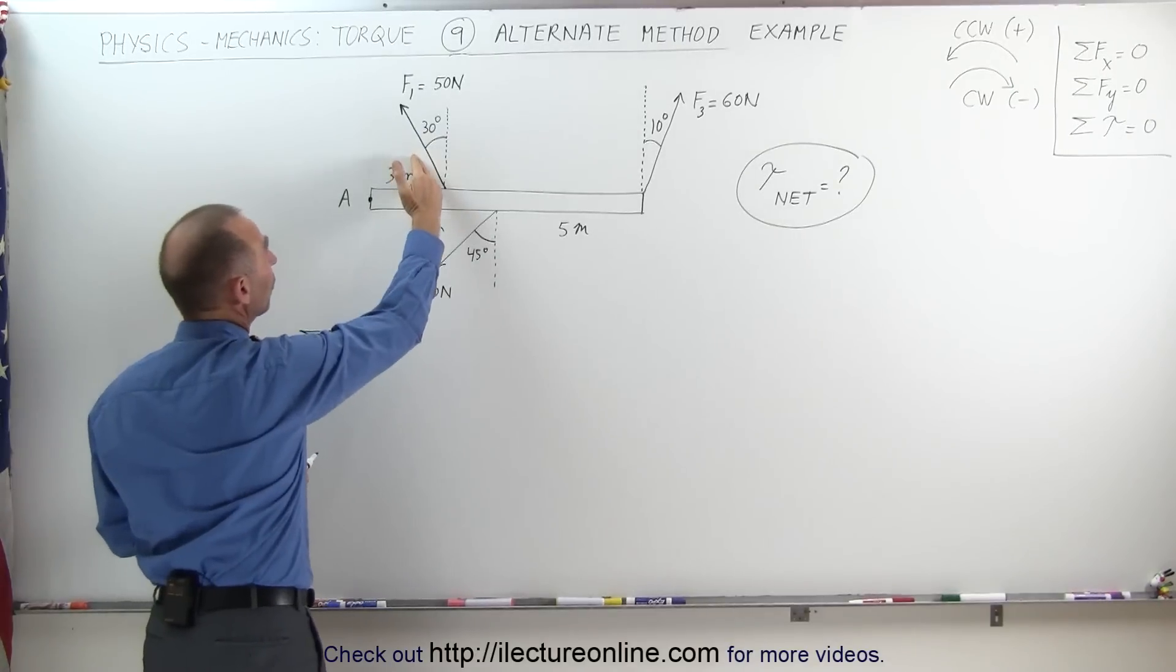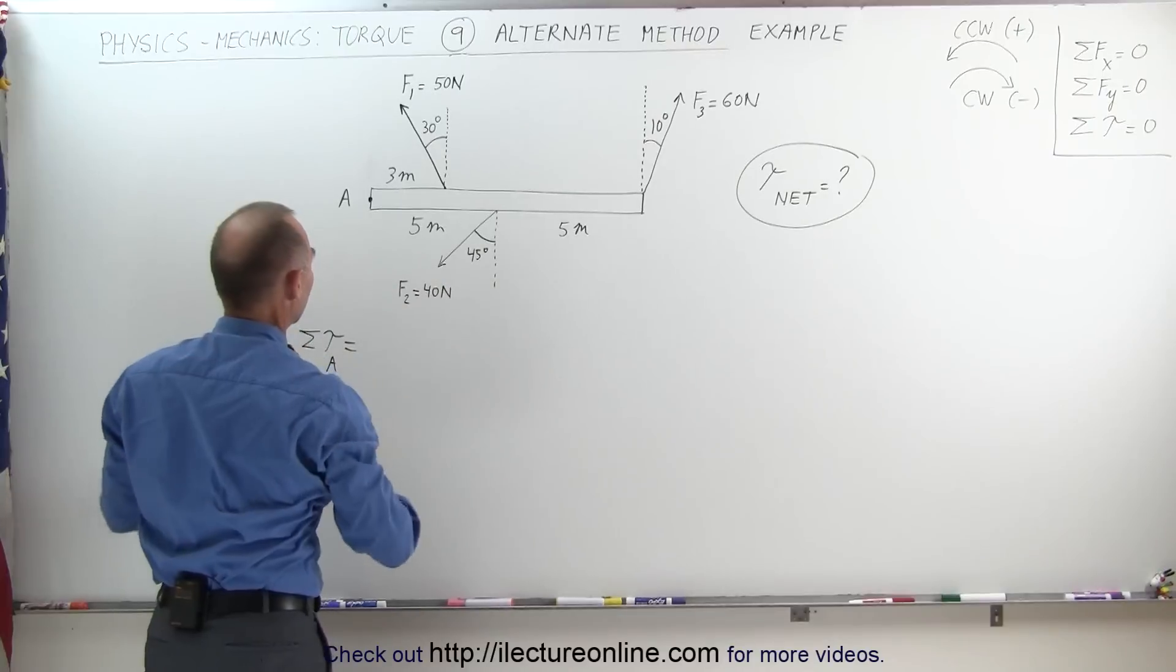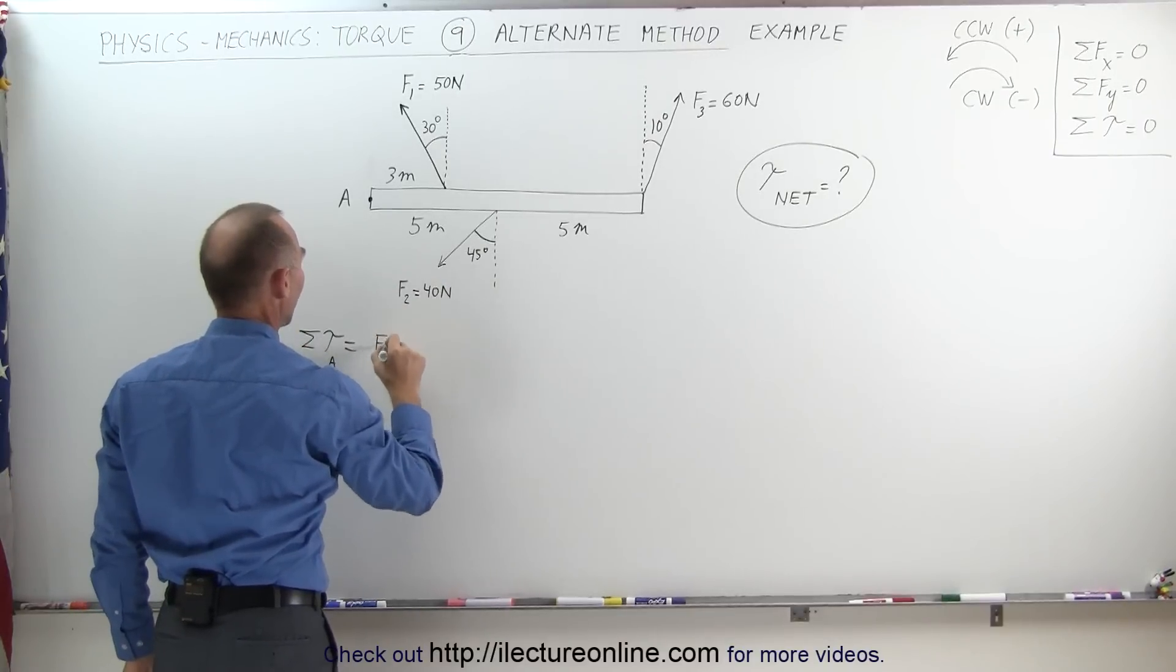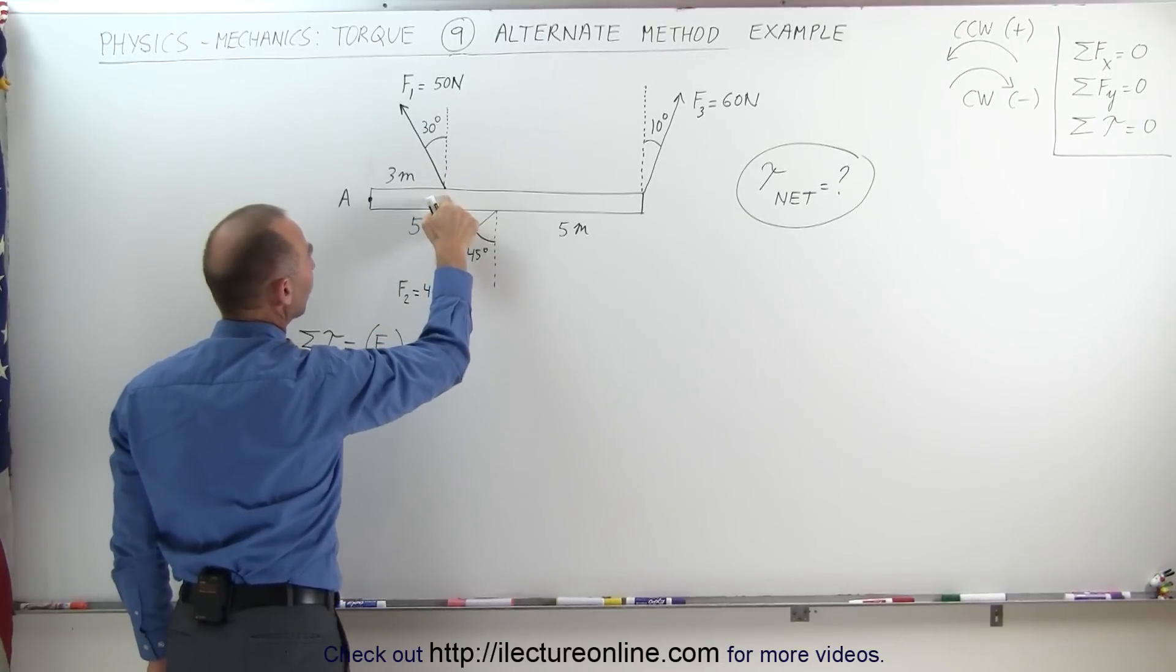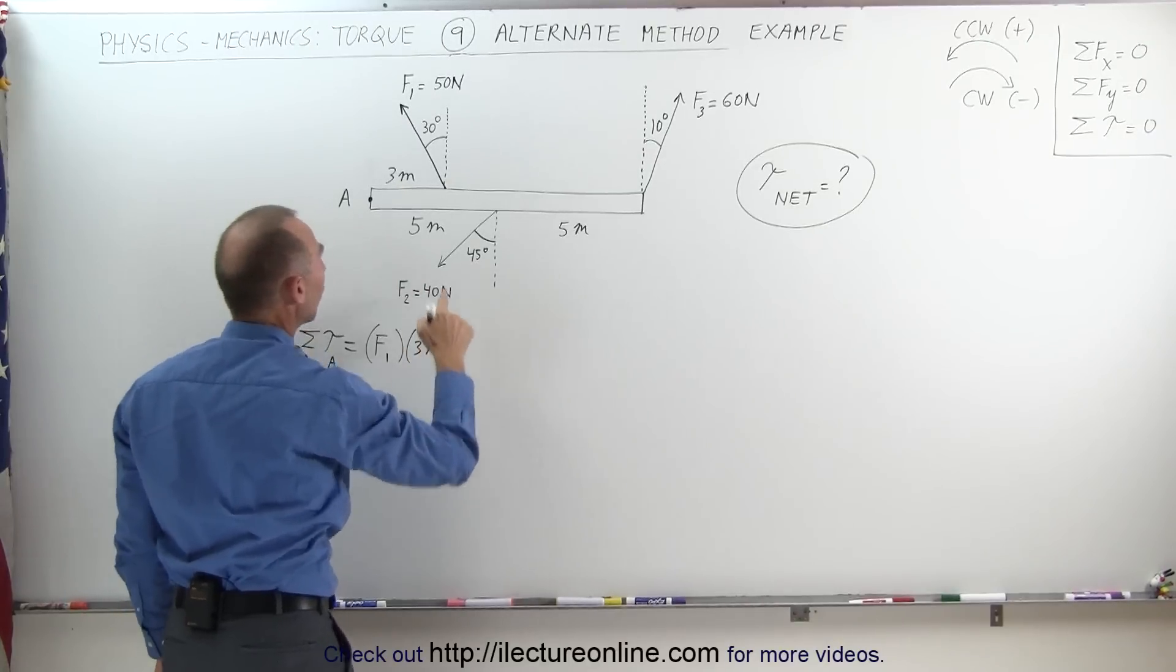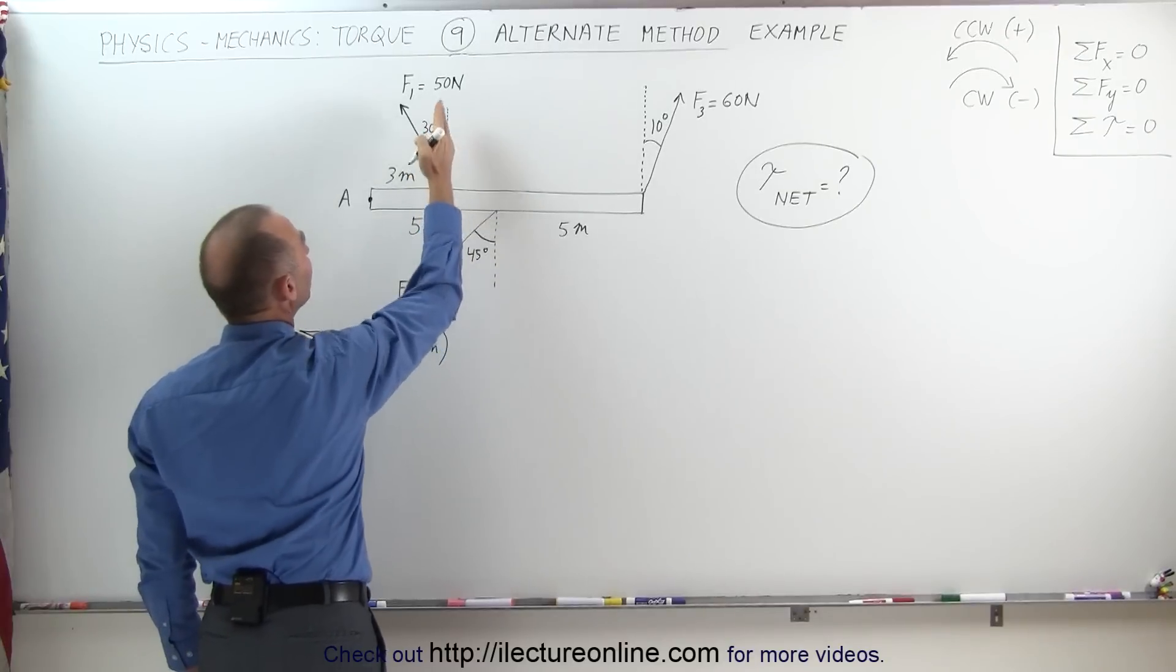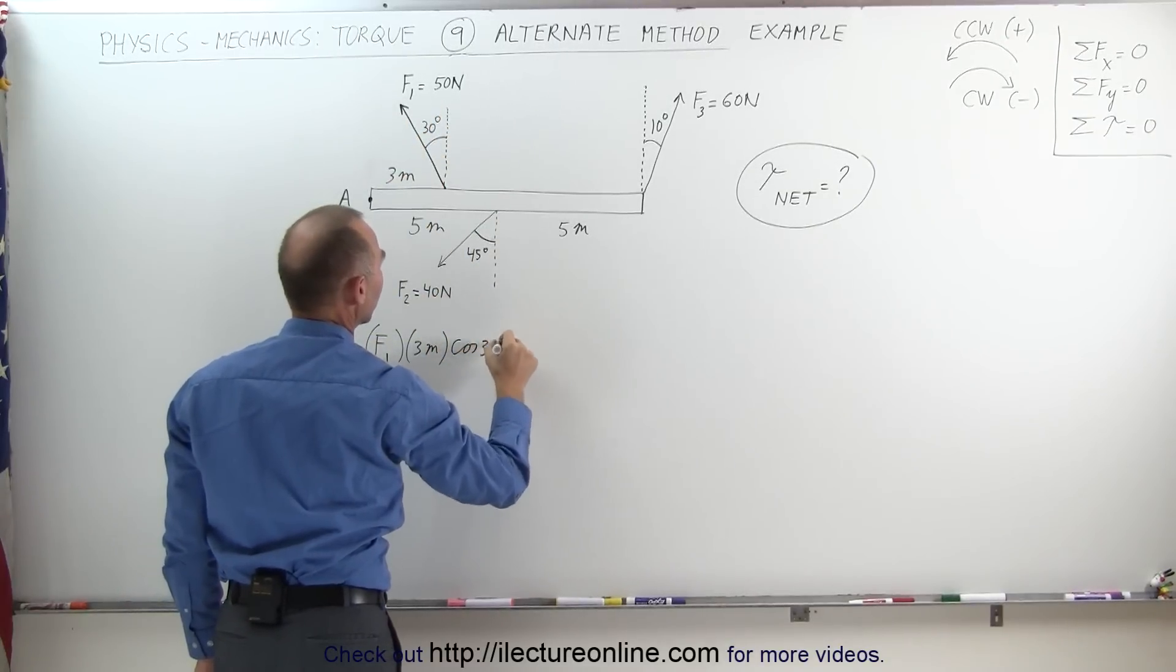Taking our first force: this force would cause counterclockwise motion, that's a positive torque. Therefore, it equals F1, the magnitude of the force, times the distance from where the force is acting to the pivot point, which is 3 meters, times the cosine of the angle between the vertical and the force. In this case, the cosine of 30 degrees.